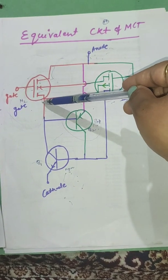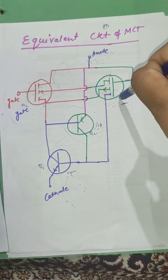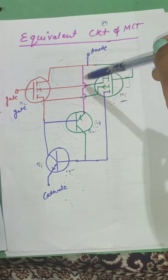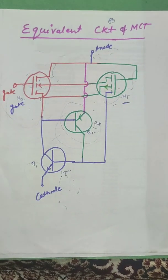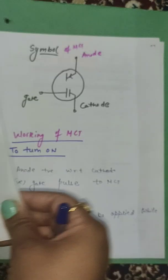If we get positive gate pulse to M2, the regeneration process will not be there. It will block by Q2. Anode to cathode current will not flow. This is a working of MCT force control switch.